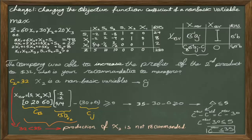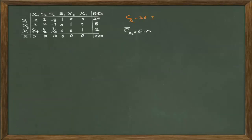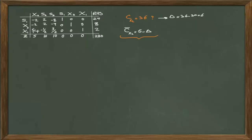Now let's look at the case where the change causes the final table to no longer remain optimal and we have to continue. Again X2 is a non-basic variable and we want to know the impact of changing its coefficient to 36. Recalling from the previous slide, the coefficient of X2 equals 5 minus delta. This time delta is the difference between the new coefficient 36 and the old coefficient 30, so delta equals 6. Calculating the new coefficient for X2 gives negative 1.